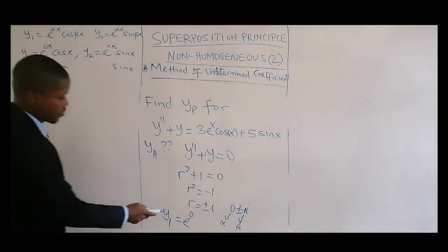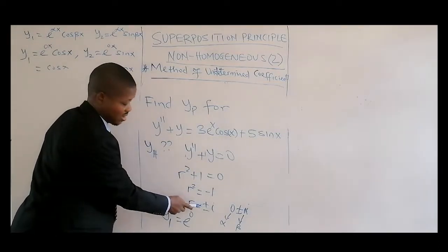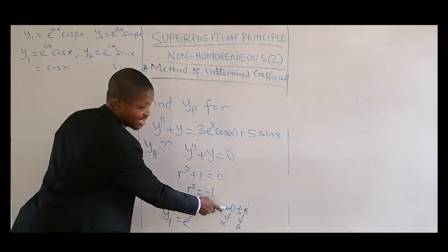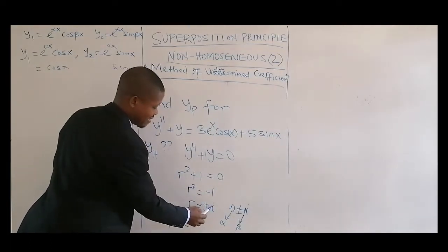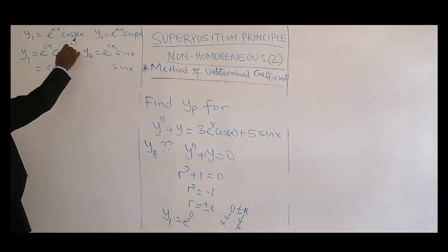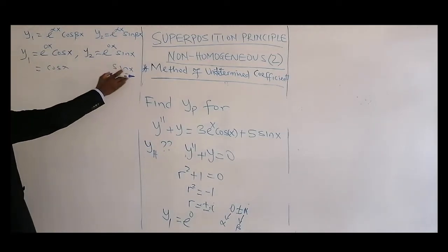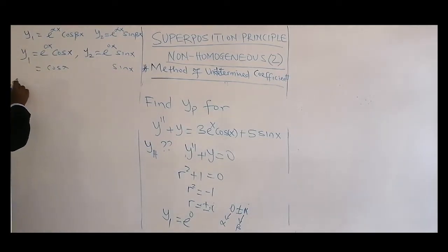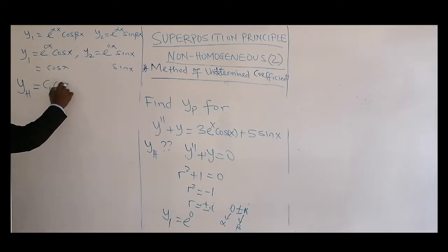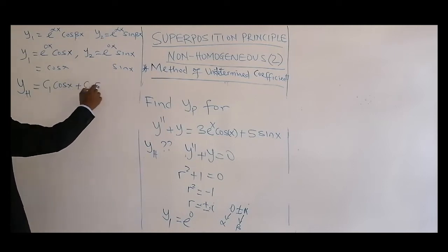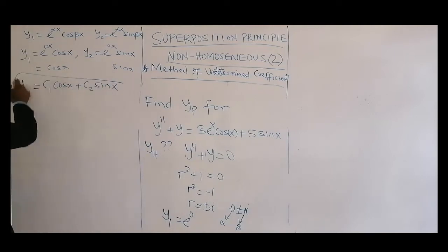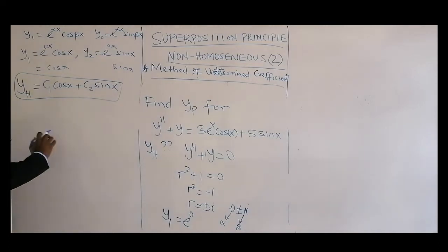So in this case, we don't have the alpha part — the real part is zero. The coefficient of i is one, which is beta. So y1 = cos(x) and y2 = sin(x). The general solution for the homogeneous part will be y_h = c1·cos(x) + c2·sin(x). Then the next thing to do is to divide the equation into two parts for superposition.